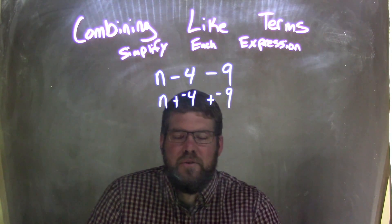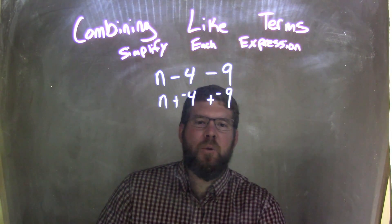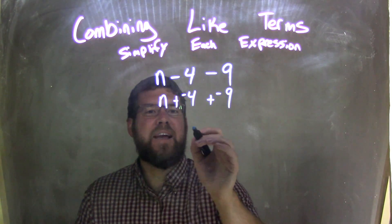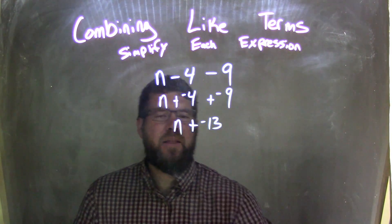n is by itself, there's no other term like it, but the numbers itself, the negative 4 and negative 9, we can combine. And negative 4 plus negative 9 is negative 13. So we have plus a negative 13 here and the n there.